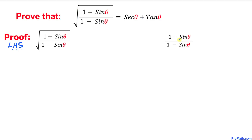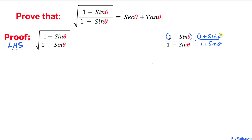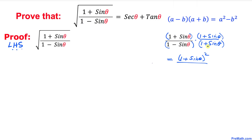Let's go ahead and simplify this fraction by rationalizing it. Rationalizing simply means we take the denominator and change the sign to positive. So I am going to multiply by (1 + sin θ) divided by (1 + sin θ). On the numerator, (1 + sin θ) times (1 + sin θ) gives us (1 + sin θ) squared, divided by (1 - sin θ)(1 + sin θ) in the denominator.